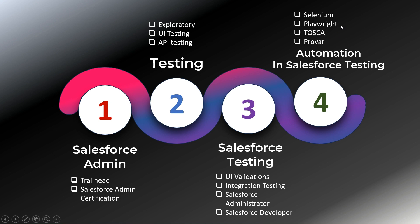Tosca is also used by a lot of companies — it's a low-code/no-code automation tool for Salesforce, though it requires a license. Provar is another well-known low-code/no-code automation tool for Salesforce automation testing. These are the different options available for automation on Salesforce. My personal favorite is Selenium, but you can explore other tools including no-code options, and if they satisfy your conditions and give good results, that works too.